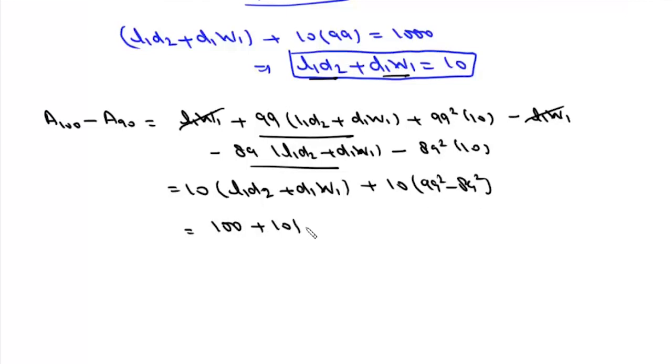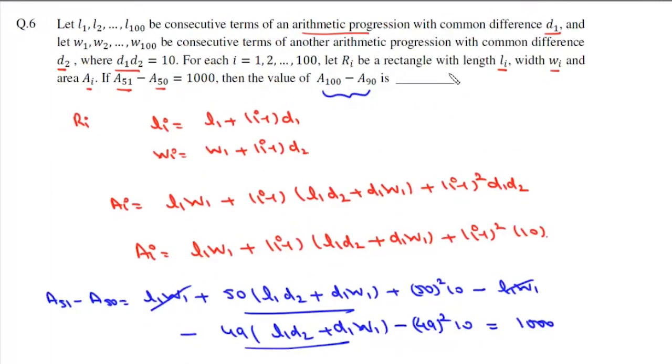Now this is a plus b into a minus b, now a minus b is 10 and a plus b is 188 so its value will be 18900 and that is the answer.